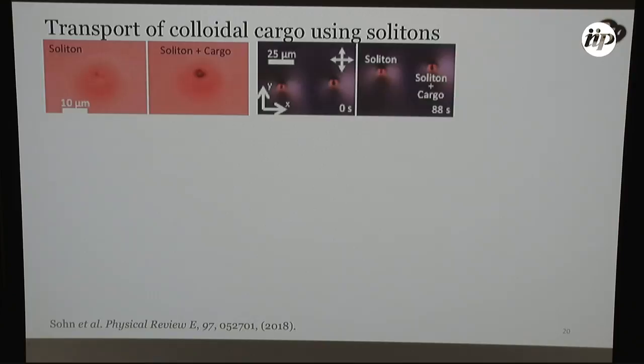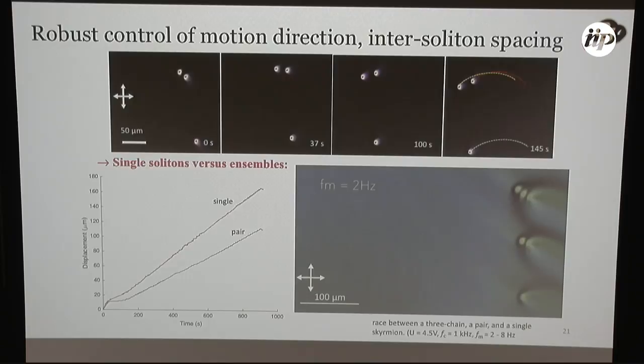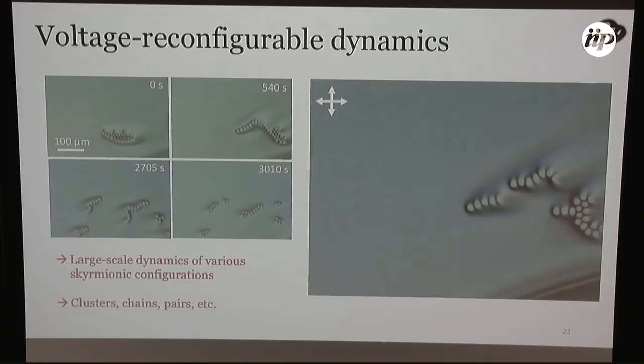We can also use these solitons to carry cargo. And so going back to the soliton that we looked at previously, we can see bright field images of the soliton and the soliton with cargo and induce some motion of both of those cases and see that the skyrmion and the skyrmion with cargo move at the same velocity. And we can control the direction with the modulation frequency as well. Additionally, we can control the separation distance of these solitons as they move in some interesting paths. We can control the directionality and the speed of that motion. And with modulating the voltage and changing the frequency, we can control the self-assembly of these solitons into various chains and clusters.